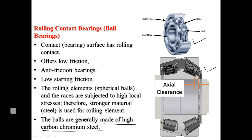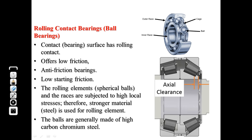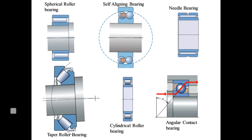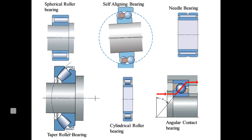Another rolling contact bearing has a tapered roller as the rolling element — not a straight cylinder but a taper, so it is called a taper roller bearing. Normally, taper roller bearings are used in pairs — two bearings are mounted on one end of the shaft, attached back to back. This arrangement is most common for automobile shafts.